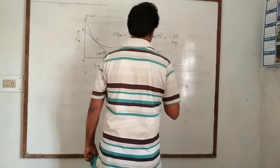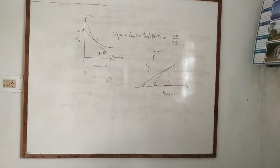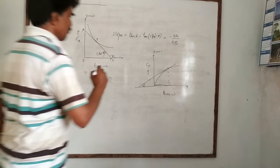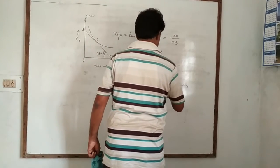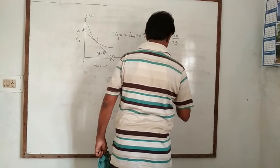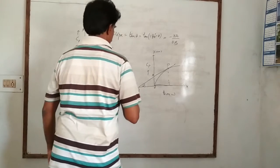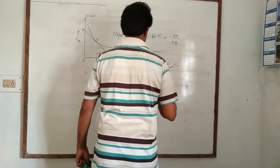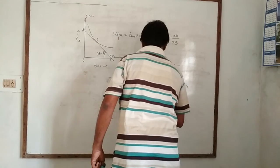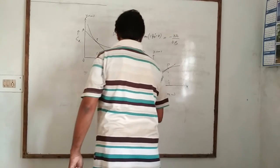So tan of angle theta will be equal to, tan of angle theta is equal to OA by OB. This is equal to rate of reaction.